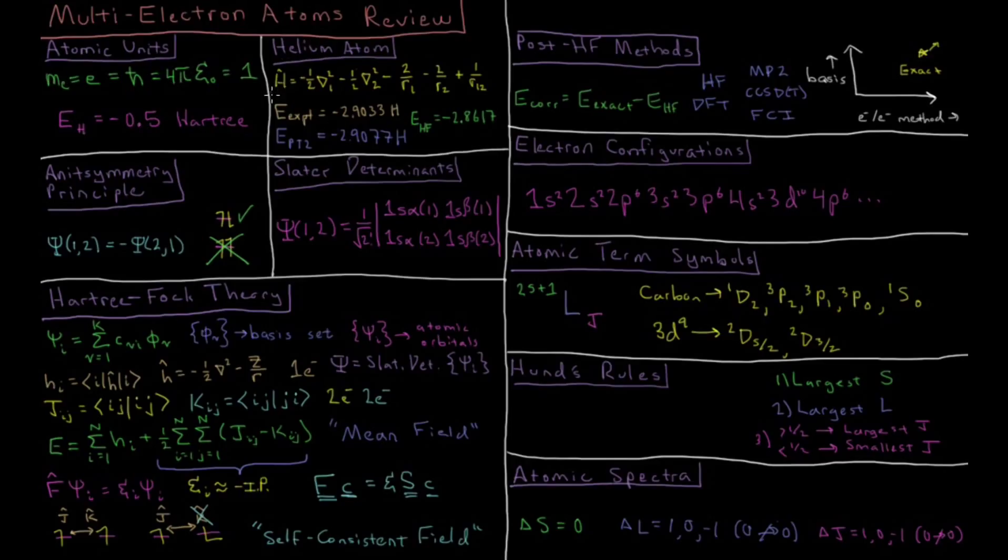For the helium atom, we have our Hamiltonian expressed as -½∇²₁ (kinetic energy of electron 1) plus kinetic energy of electron 2, plus the attraction of electron 1 to the nucleus, plus attraction of electron 2 to the nucleus, plus the repulsion between the two electrons. The repulsion between the two electrons is the key thing in multi-electron atoms that forces us not to solve the Hamiltonian exactly, but to resort to approximate methods.